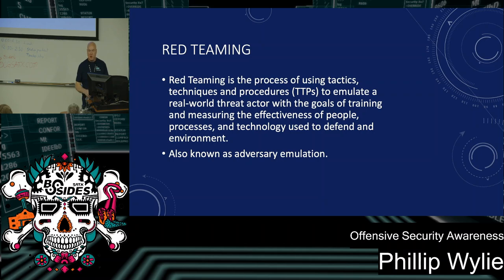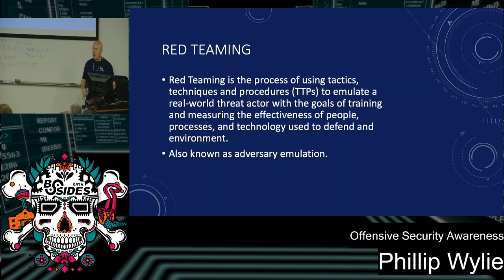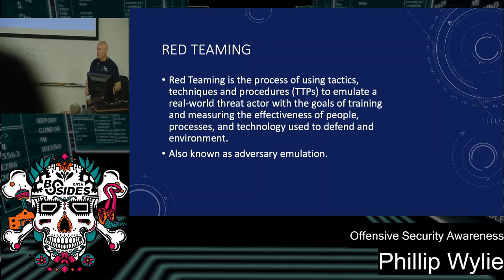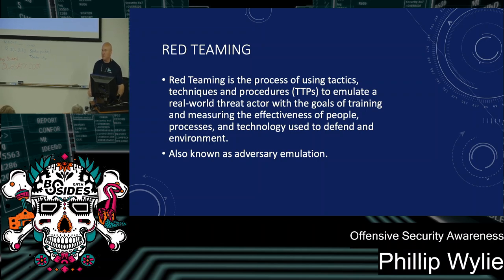Another key difference: with pen testing, IT and security groups know it's going on, so they know the activity isn't malicious. With a red team operation, you have a control group — typically the CISO and a few others. In some cases, you don't tell the blue team manager or IR team, because then they'd have a heads-up, might want to avoid looking bad, and could tip off their team.